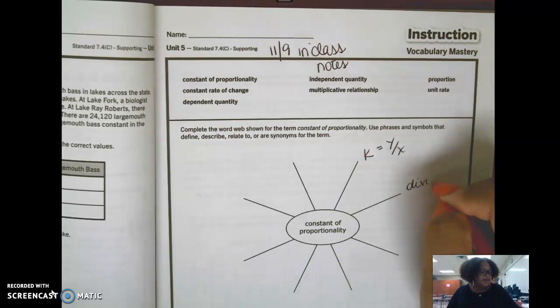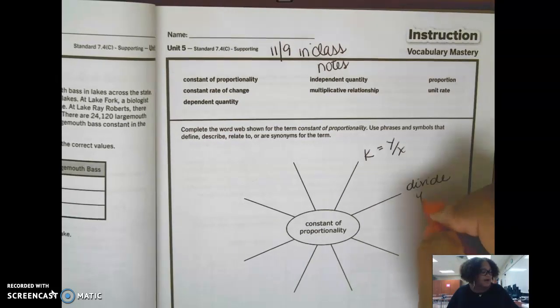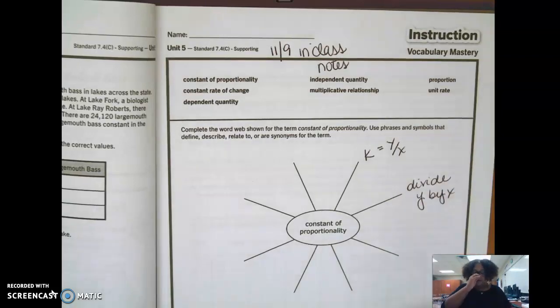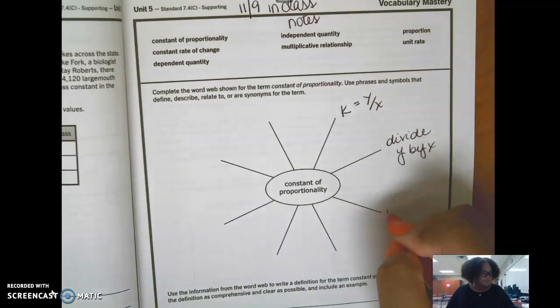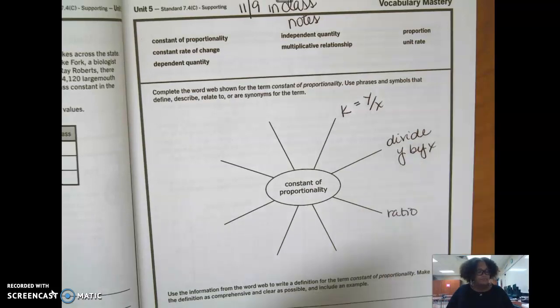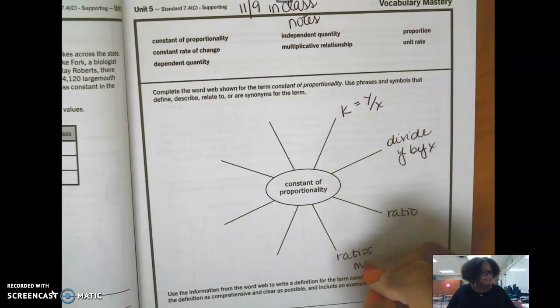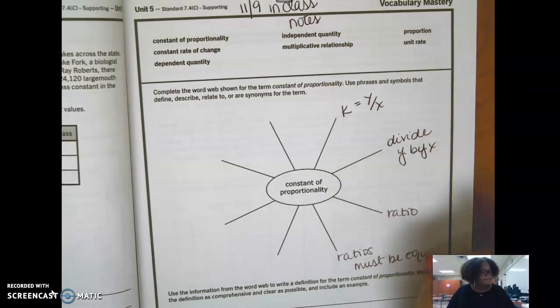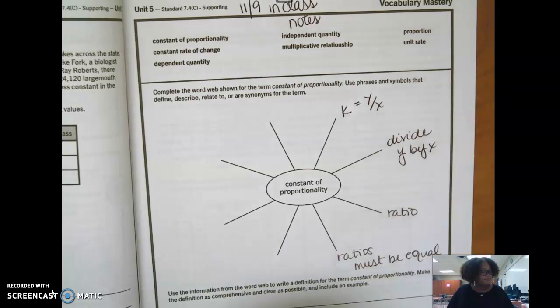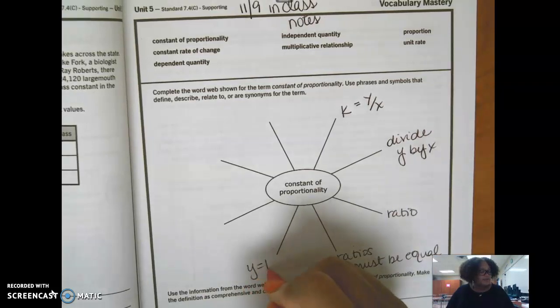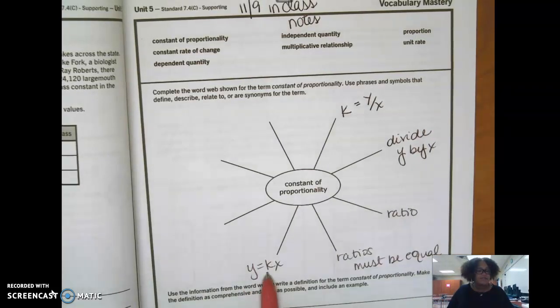Another thing that helps us remember, divide y by x. It's a ratio. Ratios have to be equal. We could say y equals kx, so all we did was mix up this to get that and vice versa.